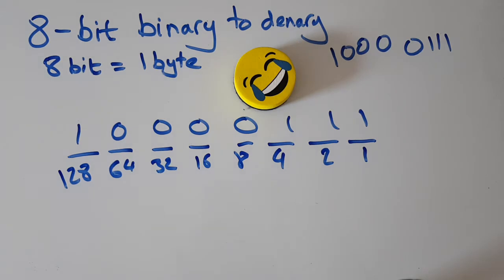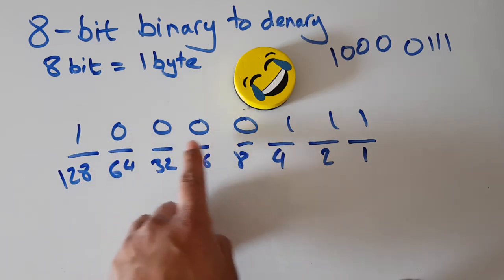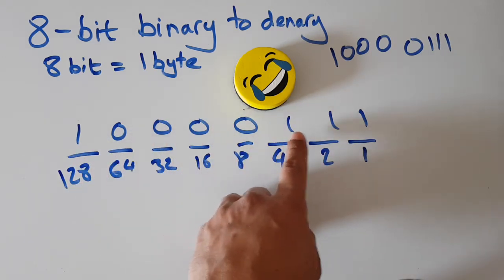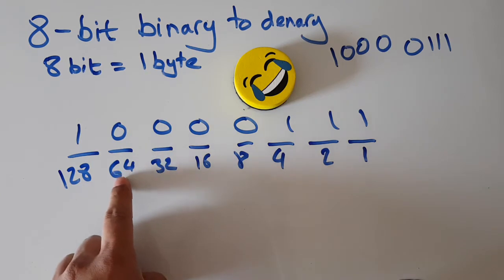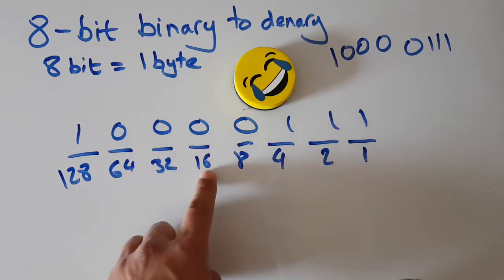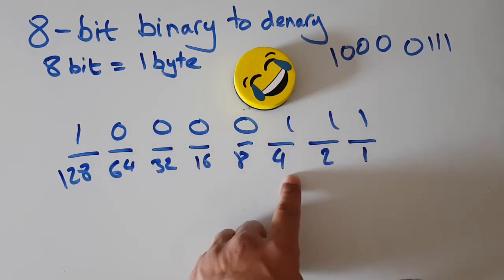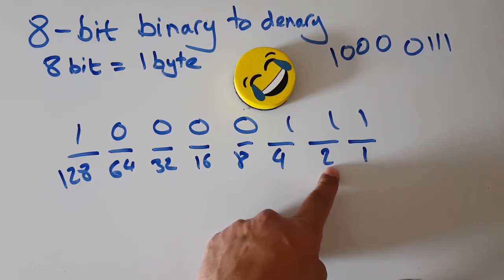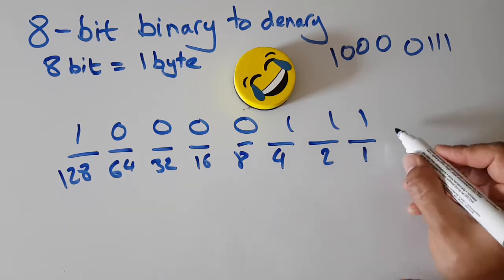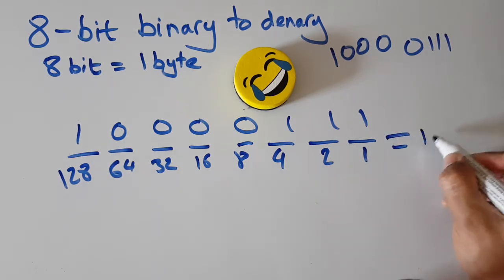Finally, we just look at the ones that have been switched on. That's on, those are all off, on, on, on. So I take 128 and add it — not that, not that, not that, not that — 128 plus 4 is 132, plus another 2 is 134, plus one more equals 135.